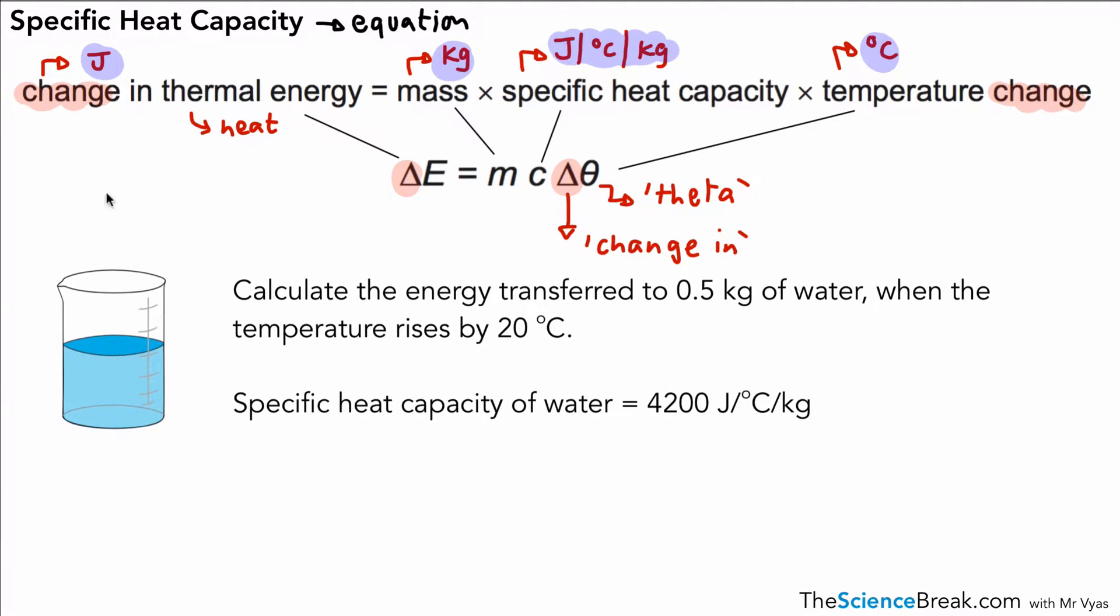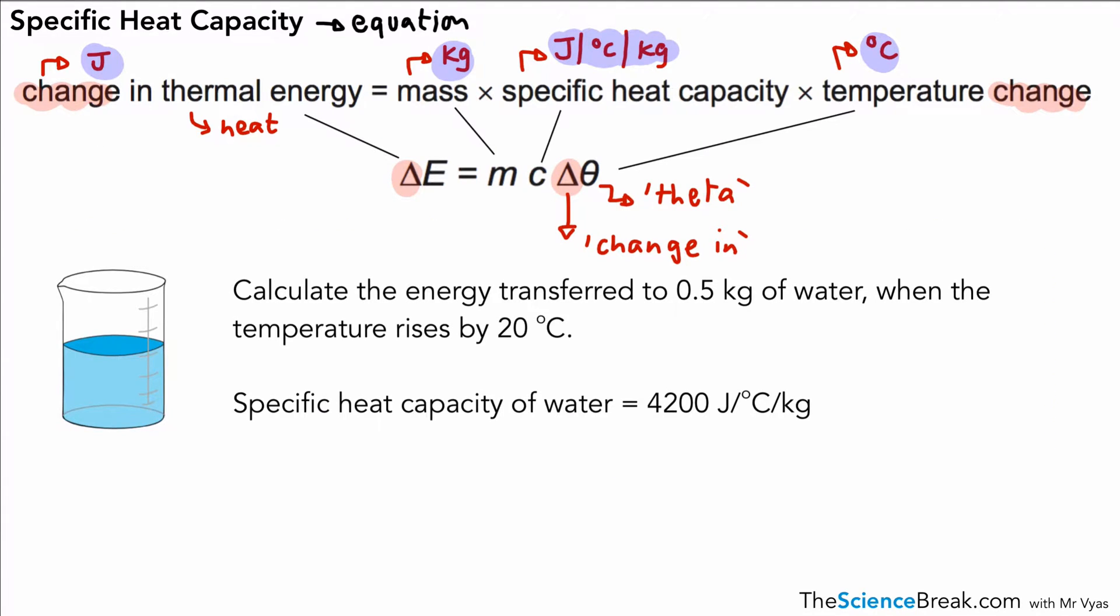Okay, so here we could do a straightforward example using our equation above. We've got a question that's asking us to calculate the energy transferred to 0.5 kg of water when the temperature rises by 20 degrees centigrade, and it gives us the specific heat capacity of water. When you get a question like this in the exam, it's probably useful to underline the key parts.